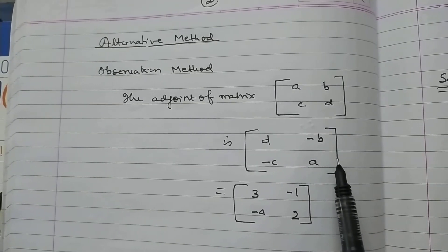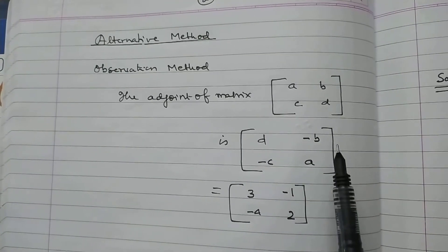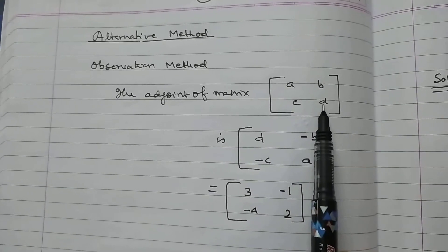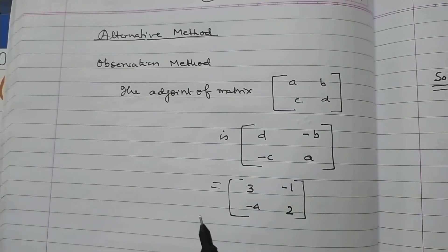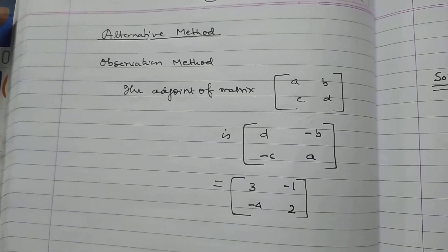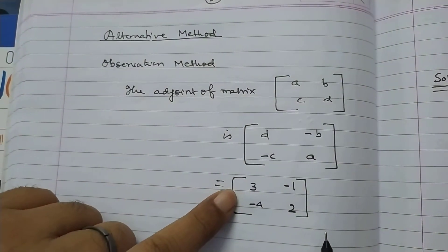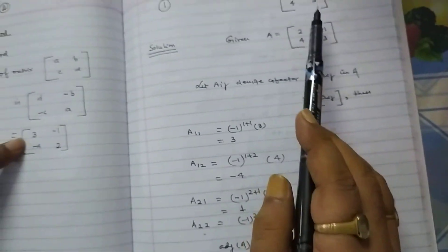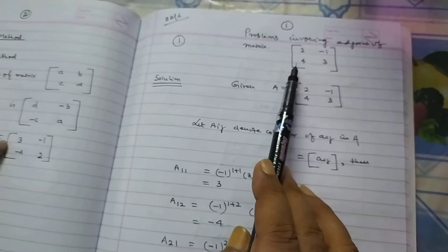We reverse the elements of diagonal. Here is A, D. So, after reversing, it is D, A. And now, we change the sign of non-diagonal elements. So, now, you compare. The matrix is 2, minus 1, 4, 3.